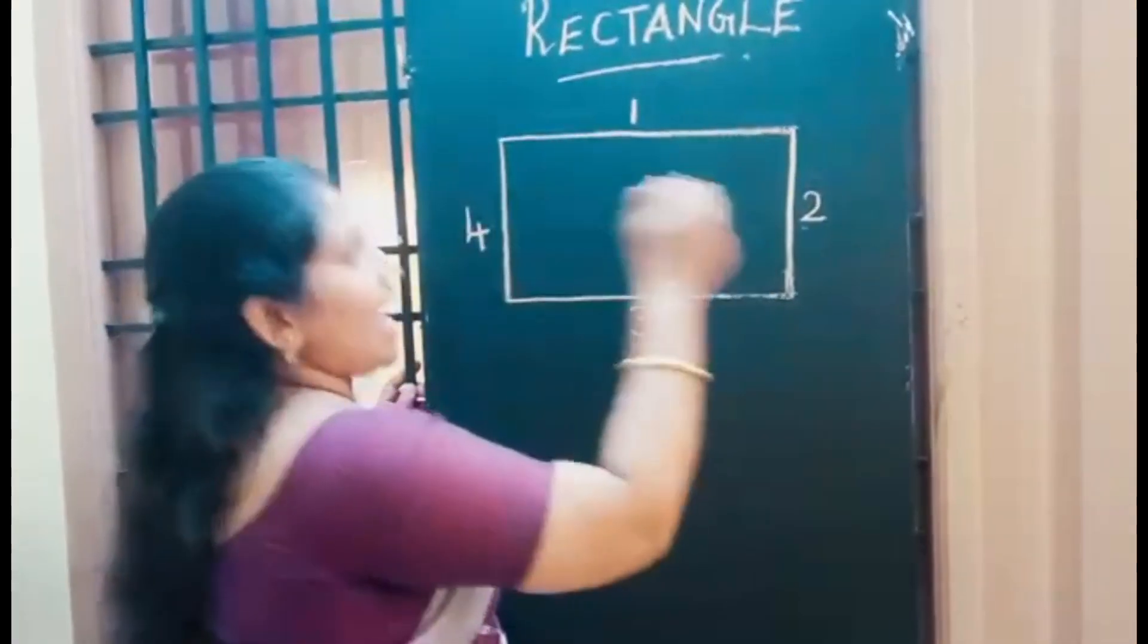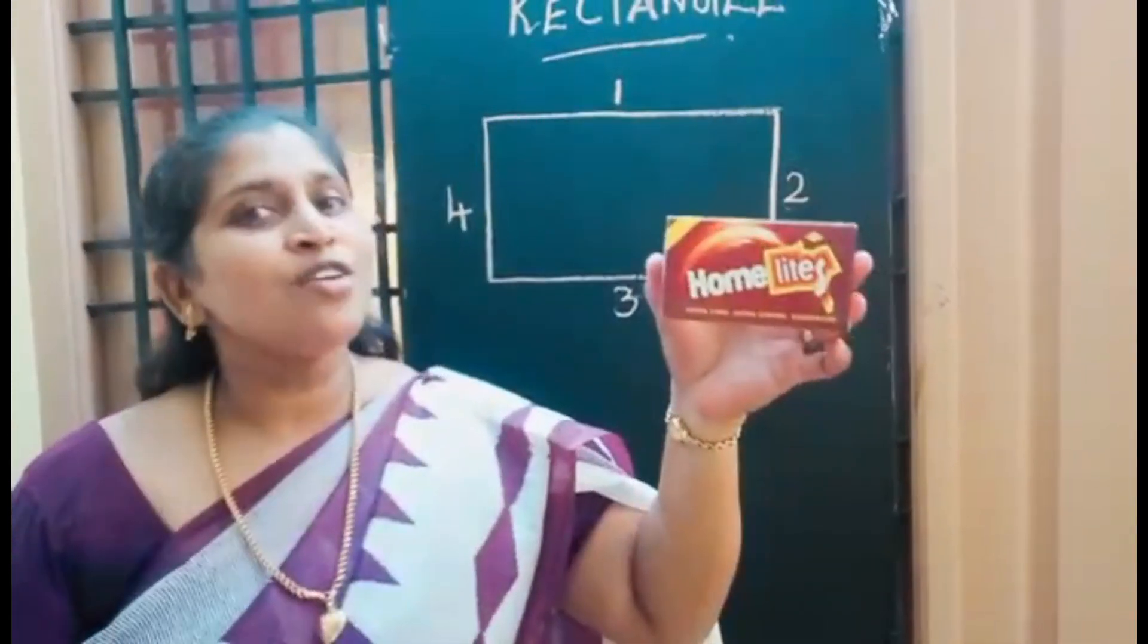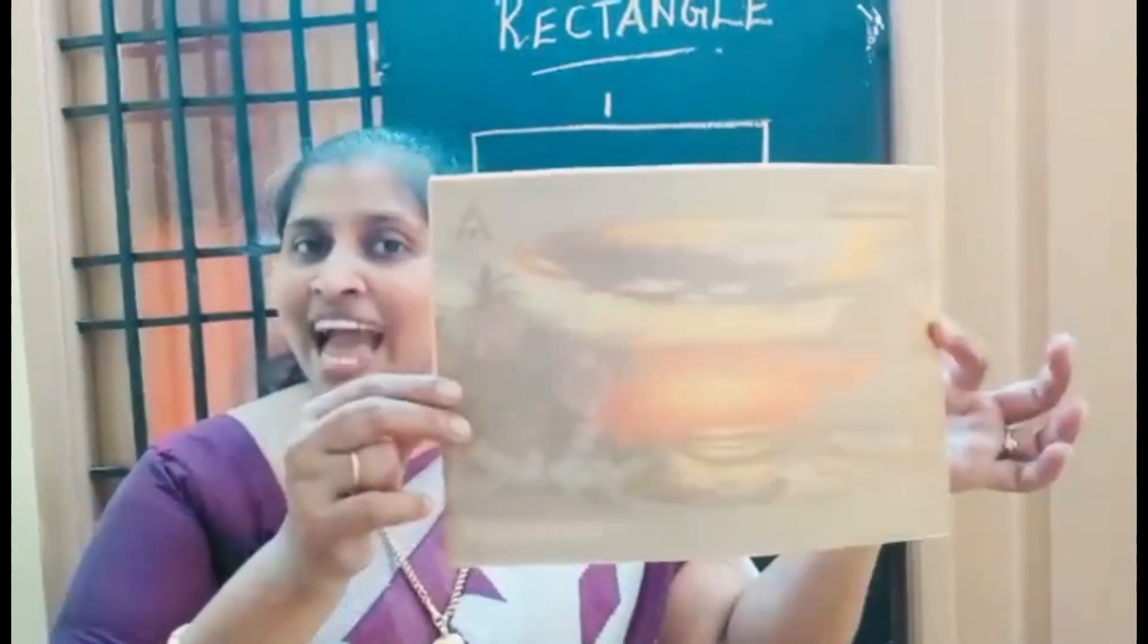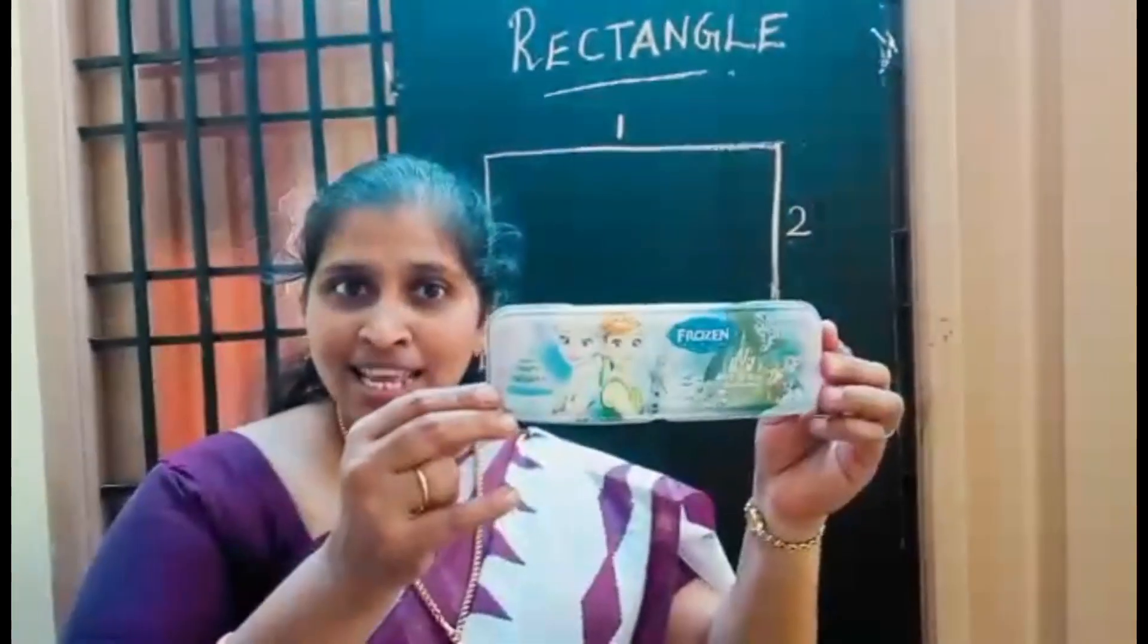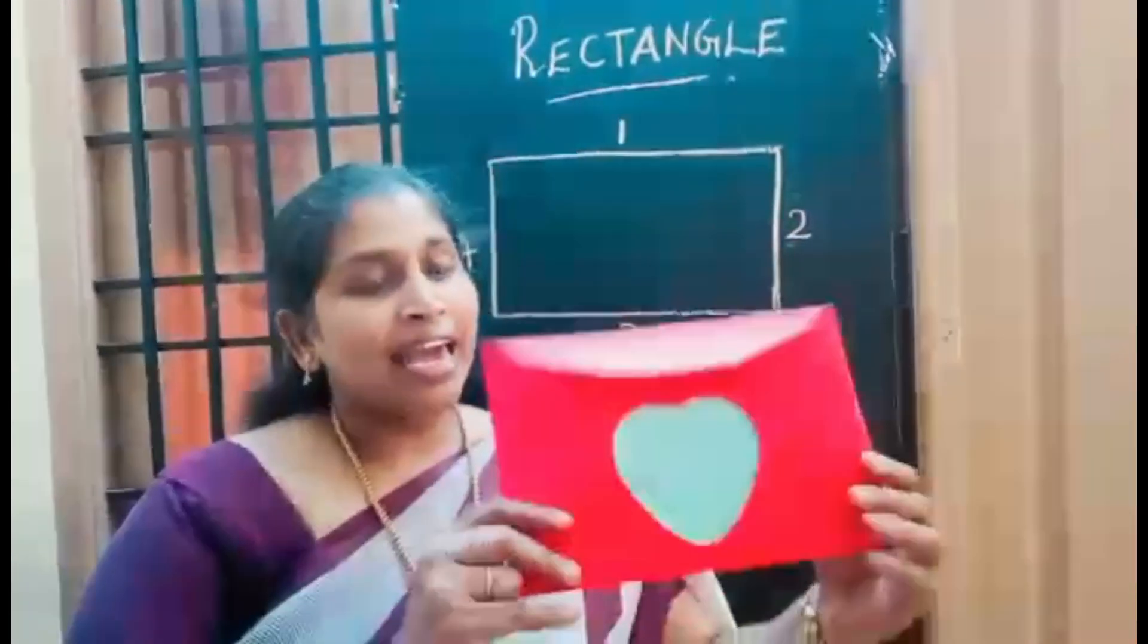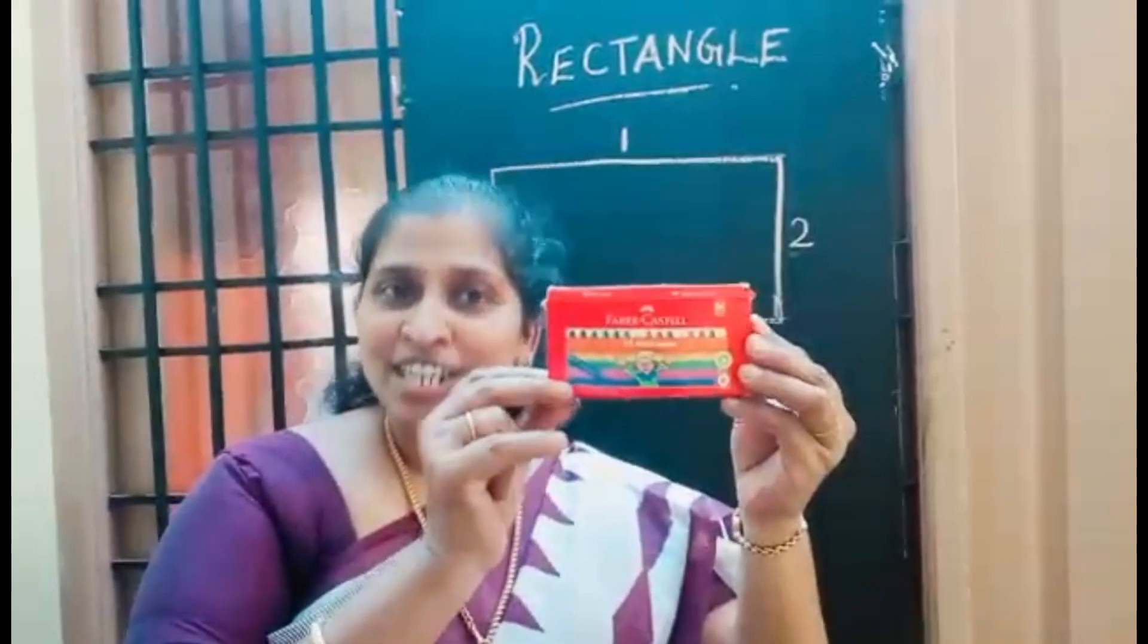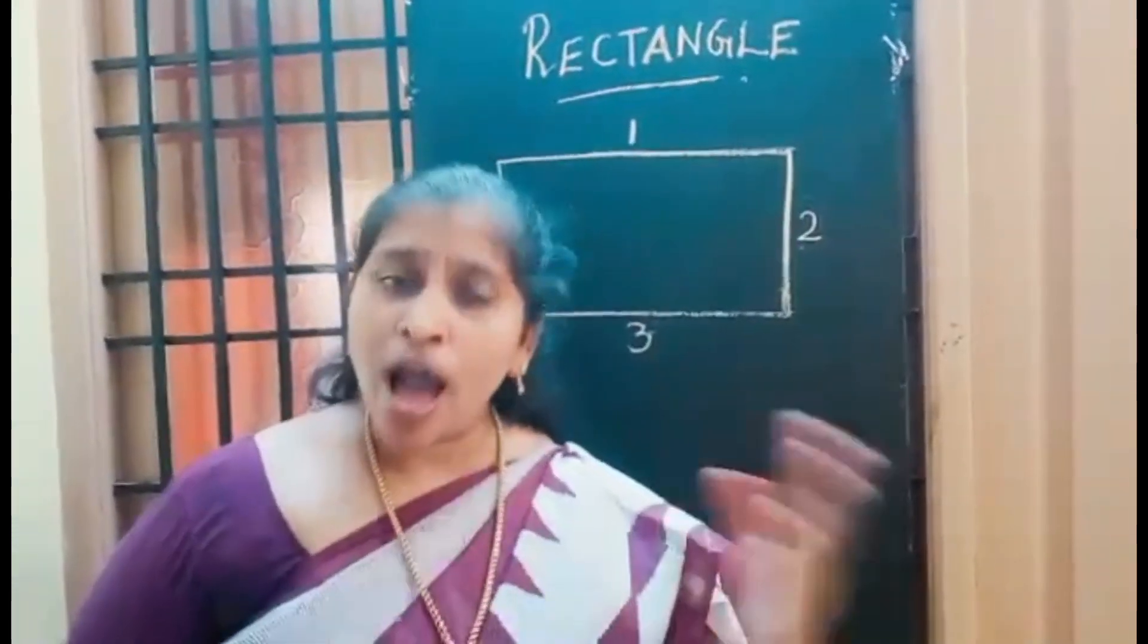See here, the matchbox is in rectangle shape. The notebook which I'm having is rectangle in shape. The pencil box is a rectangle shape. All of you have a crayon packet at home, right? The crayon packet is in rectangle shape. The door of your house is in rectangle shape. Now we all know the shape of rectangle, right? Yes, there are lots and lots of rectangle shapes around you.